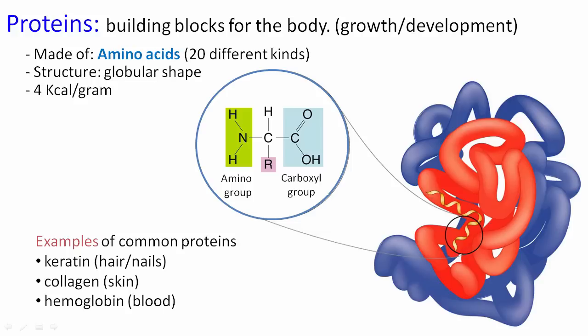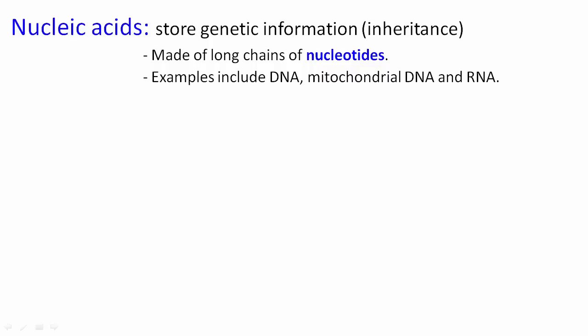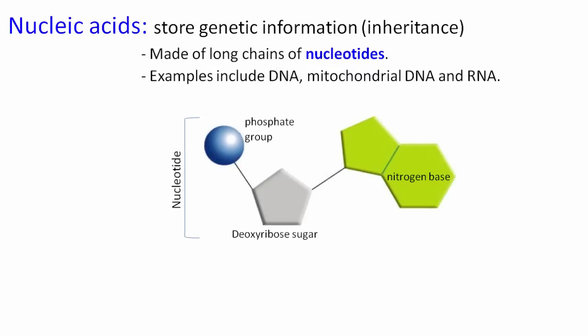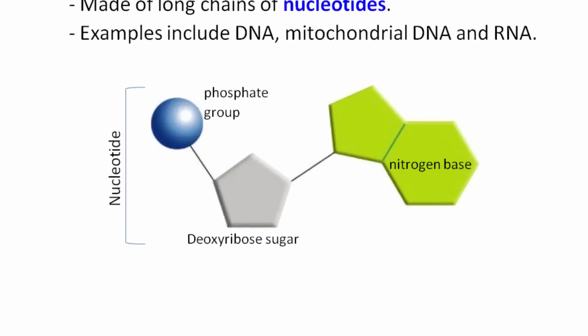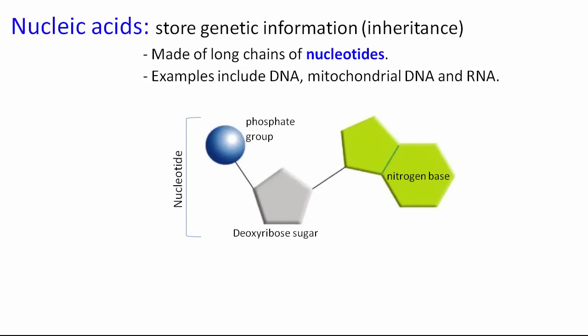But the last one is called nucleic acids. These things store genetic information—this is an inheritance idea. They're made up of long chains of monomers called nucleotides. Examples include DNA, RNA, and even mitochondrial DNA. Here we have a nucleotide, and it's got several little pieces: a phosphate group, a little sugar piece in the middle, and a nitrogen base on the end. But because a single nucleotide doesn't do much, when we put it together with other nucleotides, we can make a structure of DNA.